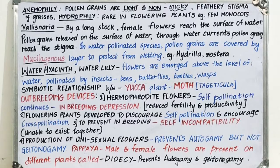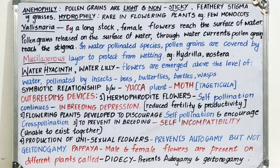Now students, agents of pollination are broadly divided into two categories: number one is abiotic agents, and number two is biotic agents. As I said briefly in the previous class, today I would like to discuss in detail. So the abiotic factors or abiotic pollination we will see.